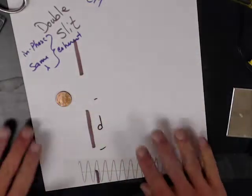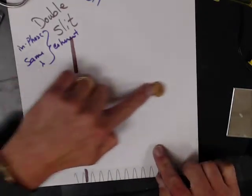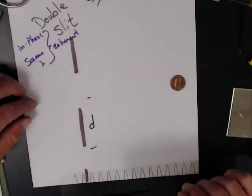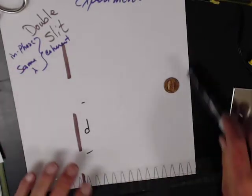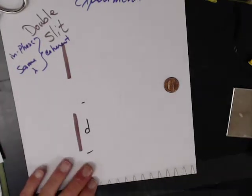But if light is a particle, like a penny, it'll just go through and you'll end up with no diffraction whatsoever. So we need to figure out what to look at over here. So, he put his screen on this side.